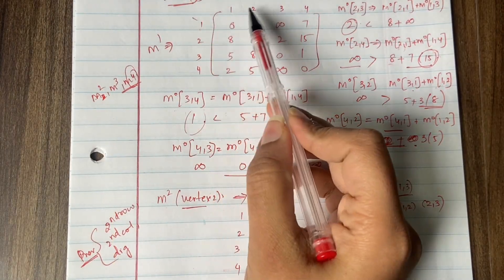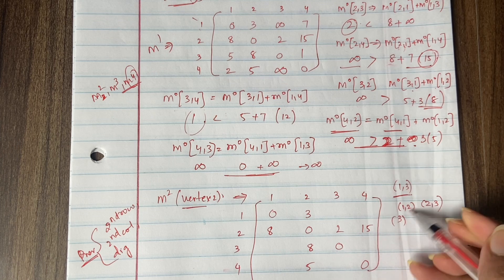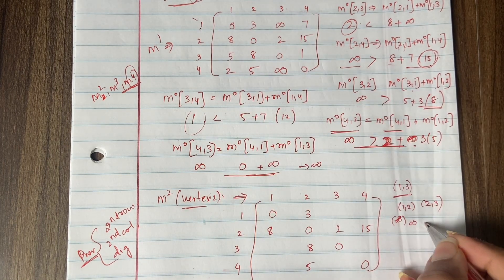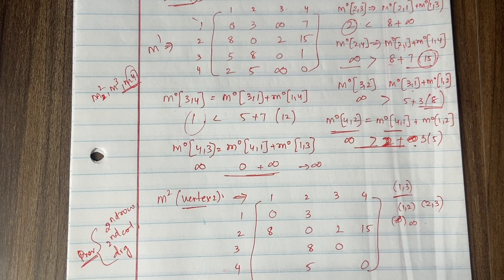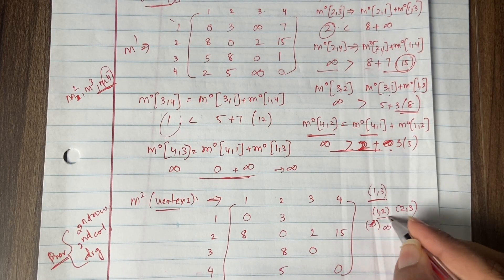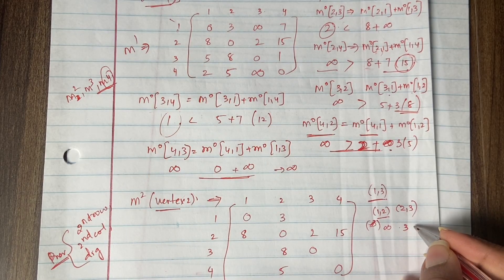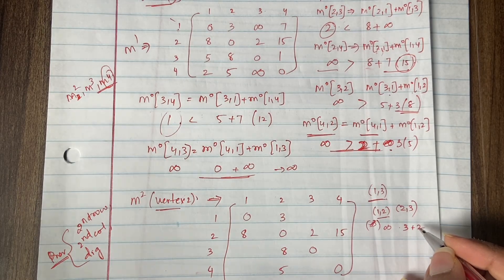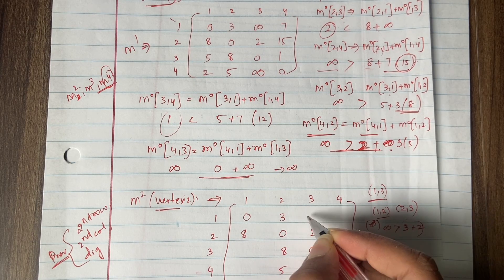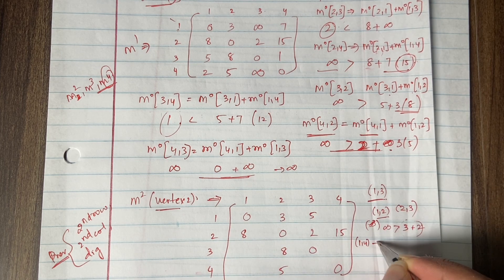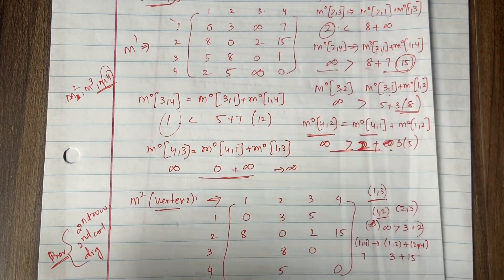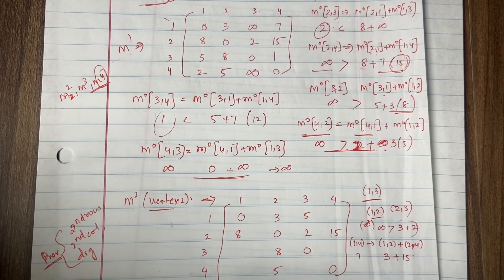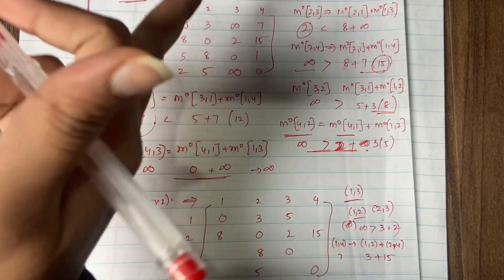For M2[1,3]: direct M1[1,3] = infinity, versus M1[1,2] + M1[2,3] = 3 + 2 = 5. So we write 5. For M2[1,4]: direct M1[1,4] = 7, versus M1[1,2] + M1[2,4] = 3 + 15 = 18. So 7 is still the minimum. Note: for M2 we always refer to the previous matrix M1, not M0.